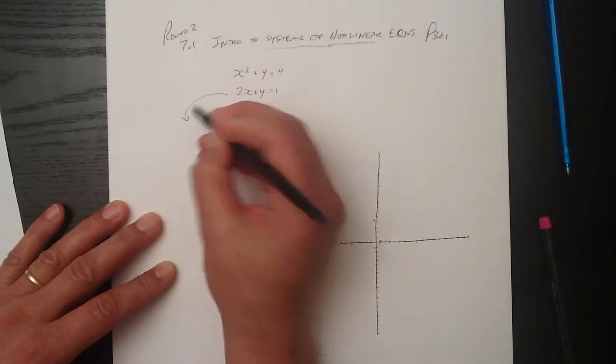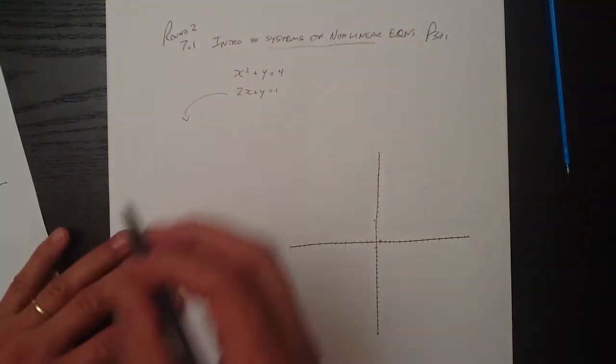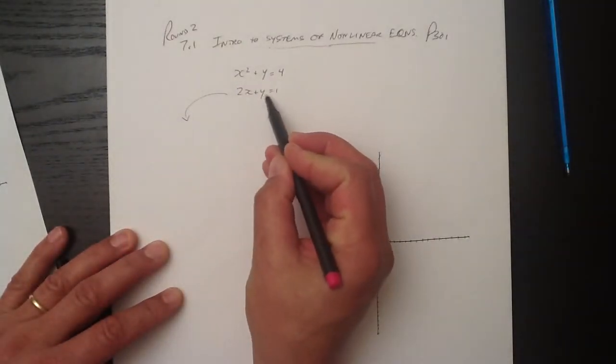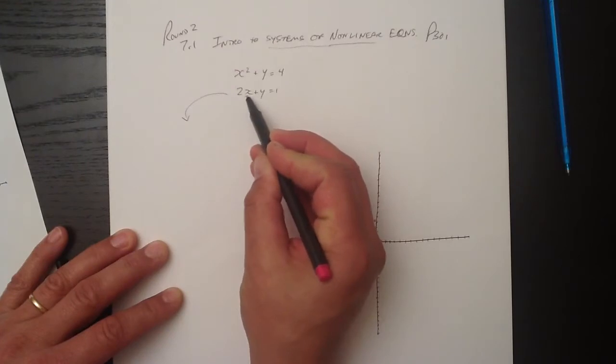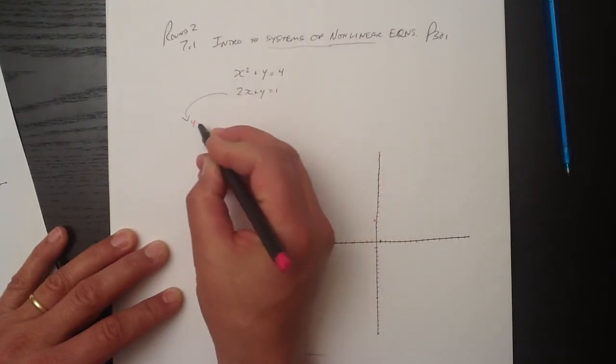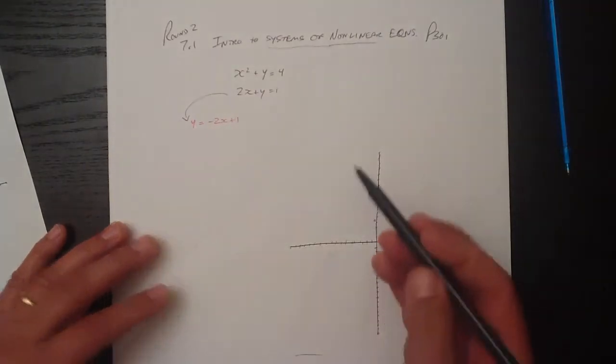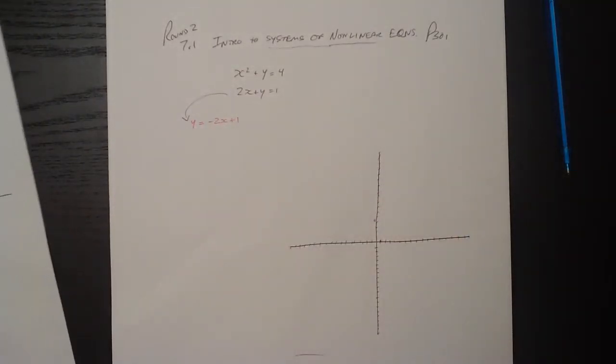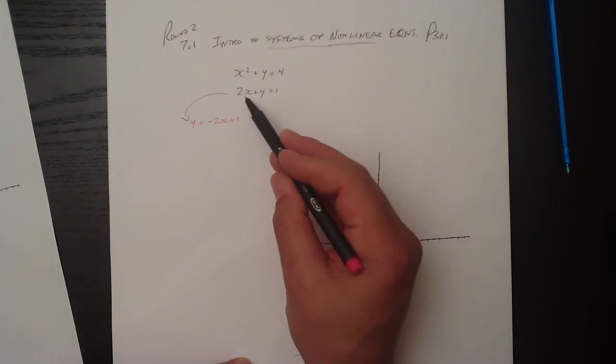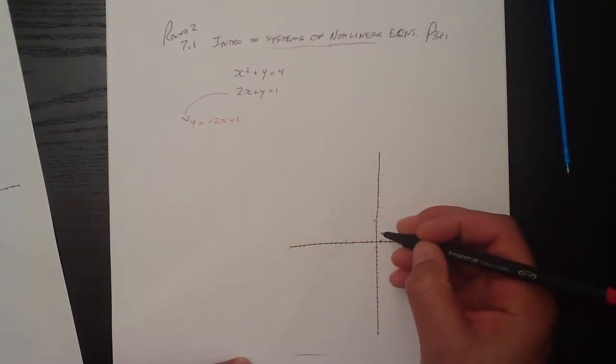So let's put this one here in its y-intercept form. So y equals 1. Let's just move the 2x over to the other side. We have y equals negative 2x plus 1. So this particular function can be graphed very easily.